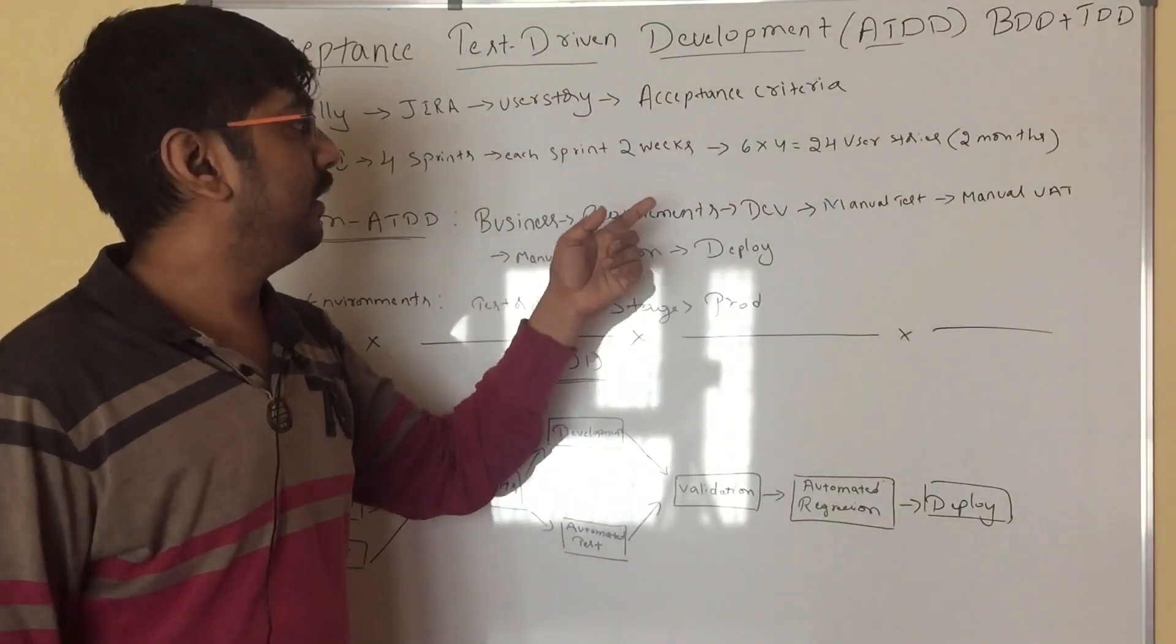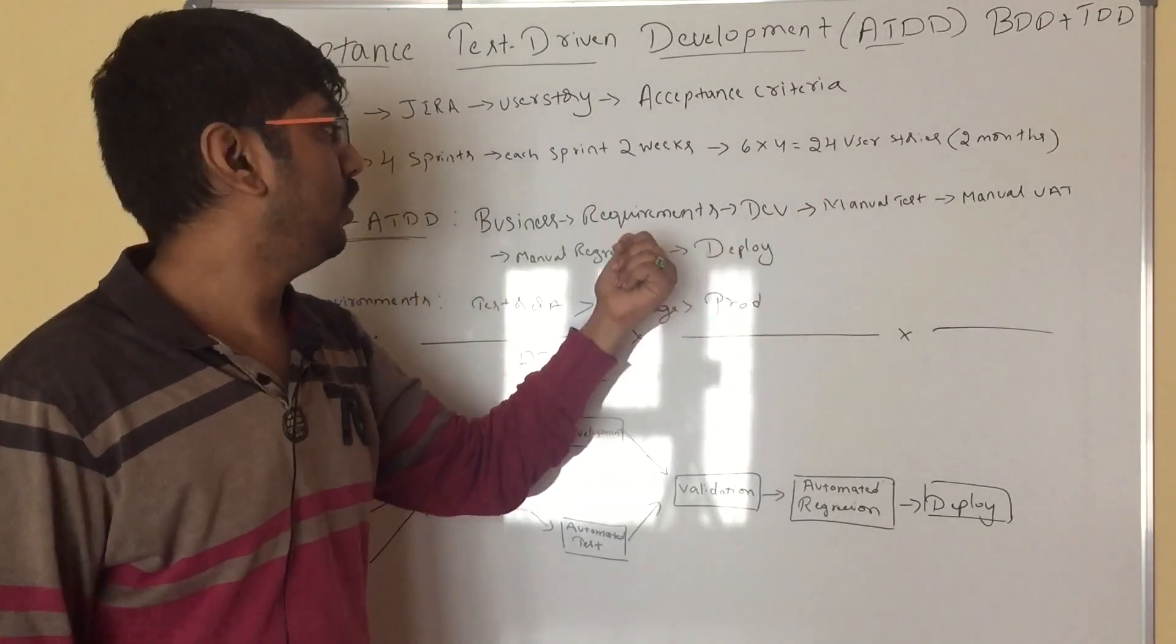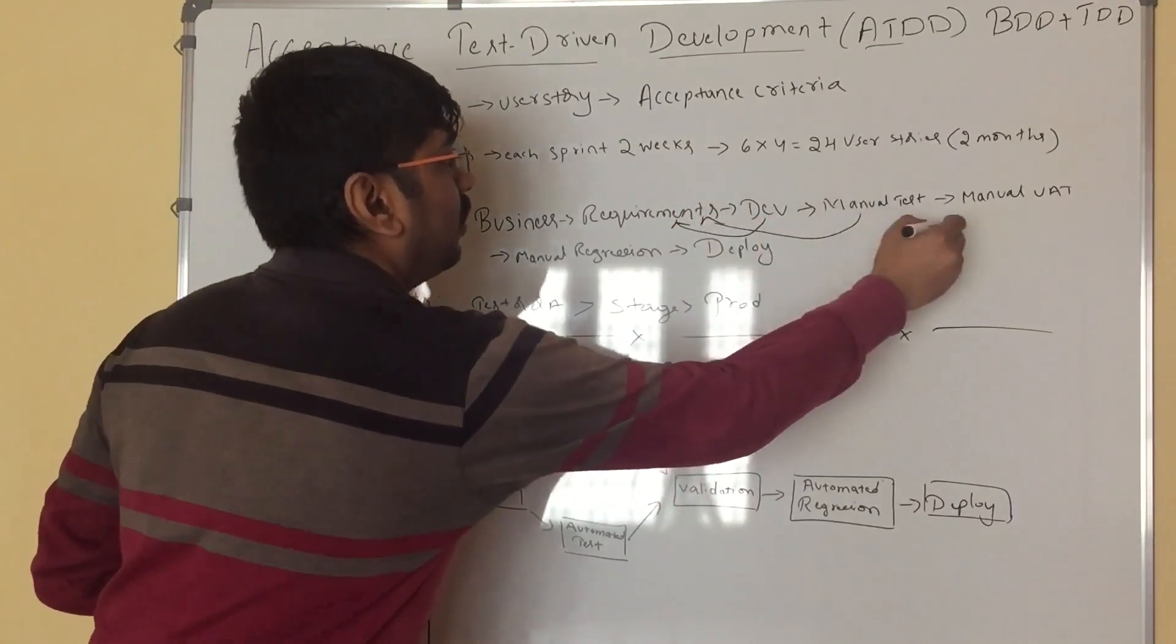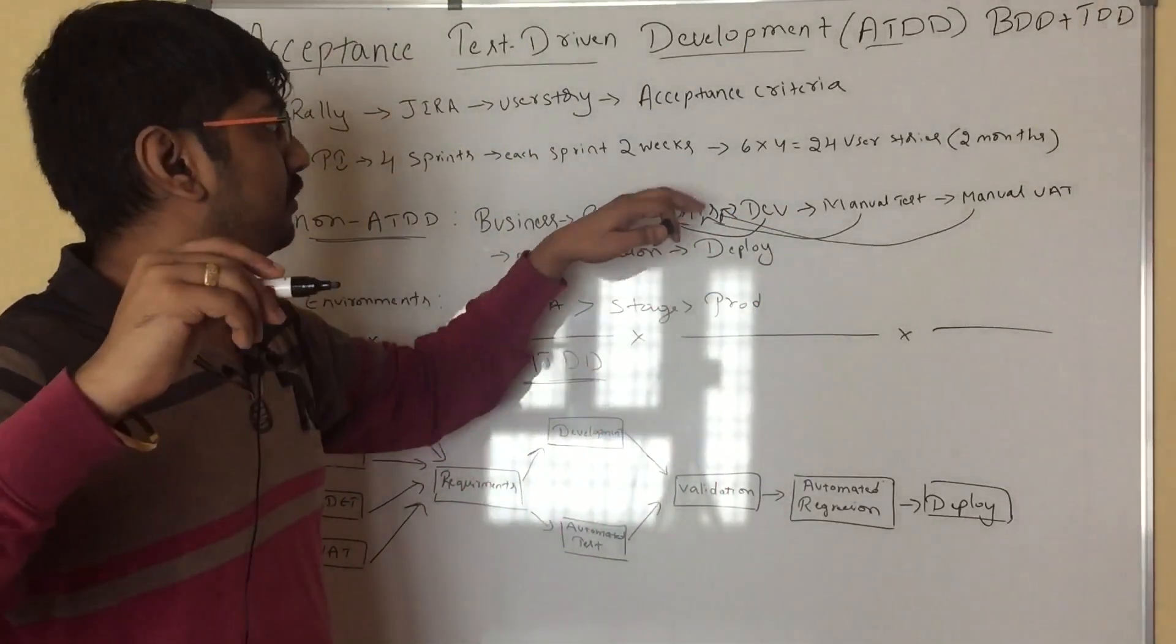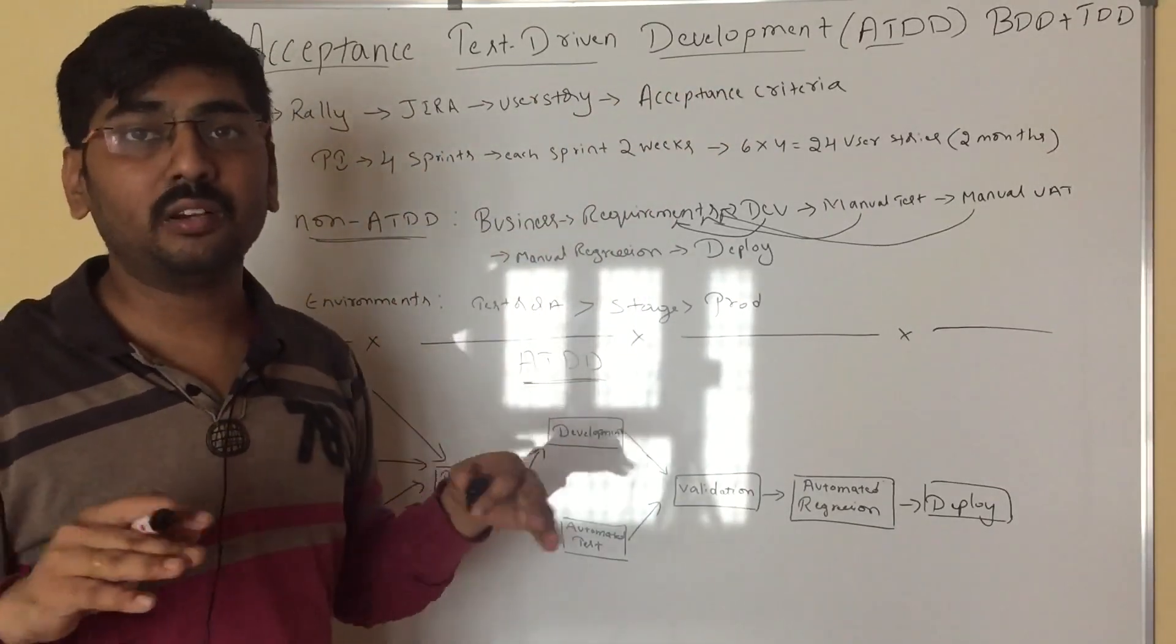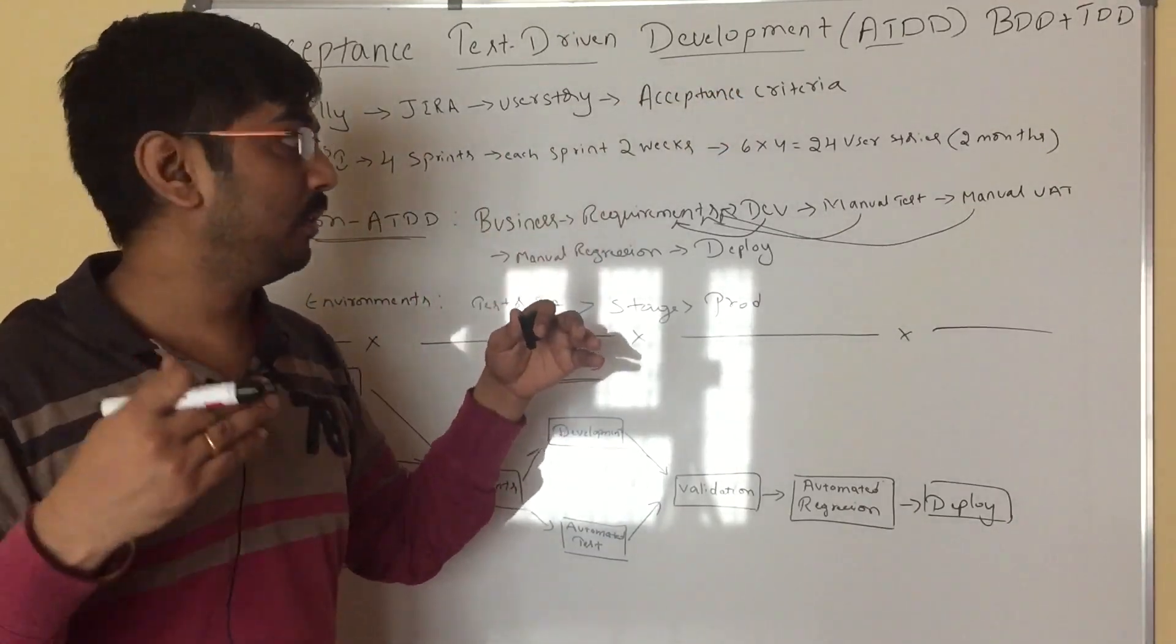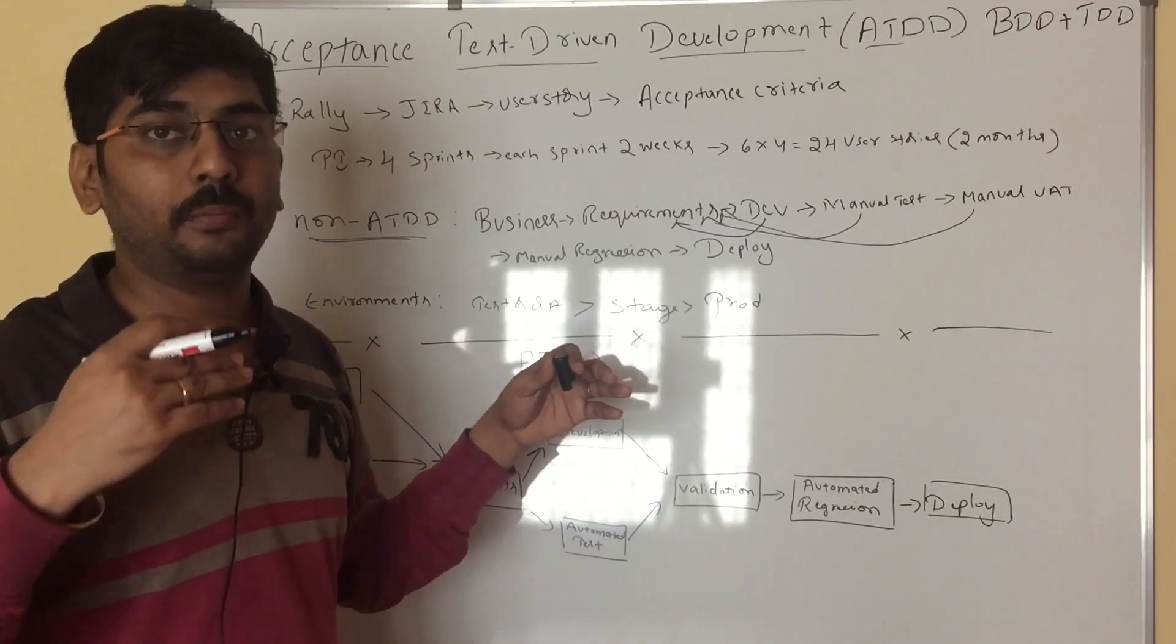Requirements from the business and then developer will code for those requirements. Then manual testers are going to write manual test cases. What I am saying, where are the misconceptions? Acceptance criteria in some companies are very limited. They will write header and leave it off. You should get it clarified in your stand-up call. You should analyze the things for that user story. It will take a lot of your efforts to analyze the user story and bring back all the positive and negative scenarios.